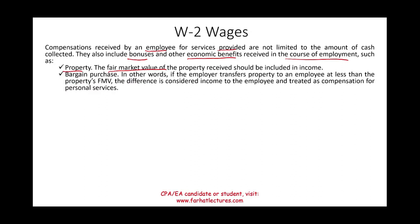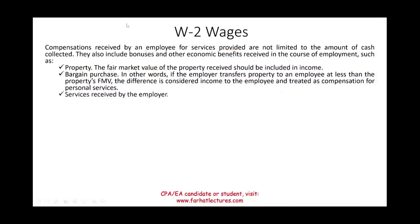Rather than giving you the vehicle outright, they may sell it to you for less than its fair value. For example, if a vehicle is worth fifteen thousand dollars fair market value and they sold it to you for ten thousand dollars, you received a discount of five thousand. That discount is treated as compensation and therefore included as part of your income.